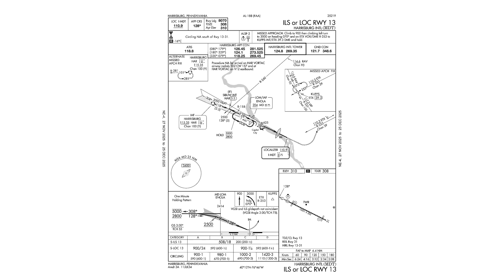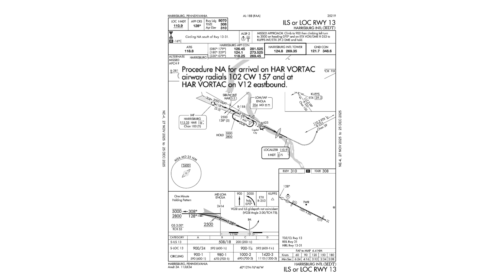In one of our recent Flight Insight quizzes, we looked at the ILS approach into Harrisburg International. A note on the approach says that the procedure is NA for arrivals on the Harrisburg Vortac airway radials 102 clockwise to 157, and at the Harrisburg Vortac on Victor 12 eastbound. This is one of the least well understood parts of an approach plate, and we'll look at one of the biggest misconceptions at the end of this video.